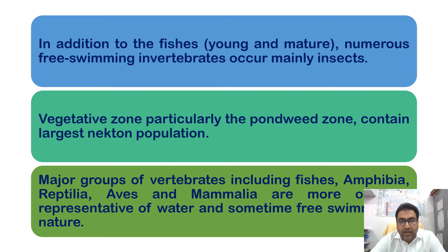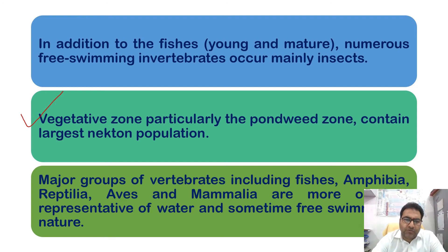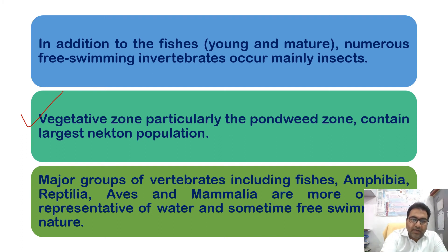The vegetative zone, particularly the pondweed zone, contains the largest nekton population. Major groups of vertebrates including fishes, Amphibia, Reptilia, Aves, and Mammalia are representative of the water and are sometimes free-swimming in nature.